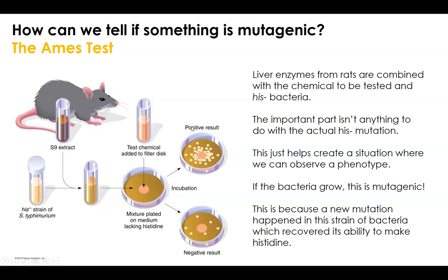So a positive result is bacterial growth — the important thing is how many mutants arise, not what they are or that they can make histidine. Seeing a lot of colonies means you go back and look at this chemical and say it causes mutations. Whatever it is, if it's something you were hoping to include as part of a pharmacological product, I would not. Comparing to the control is how we read an Ames test and that's what it's for.